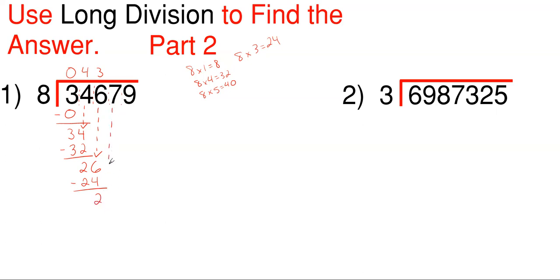Then we're going to drop the next number, which is 7, so now this becomes 27. Just like the previous one, 8 times 3 is 24 and 8 times 4 is 32 — you can't go over 27. So we place 3 right above our 7. 8 times 3 gives me 24 without going over 27, so 27 minus 24 gives me 3.